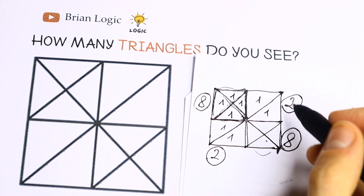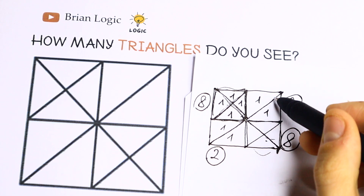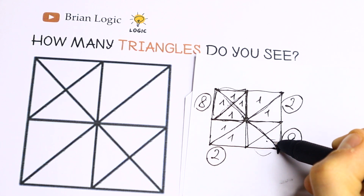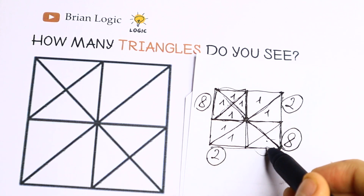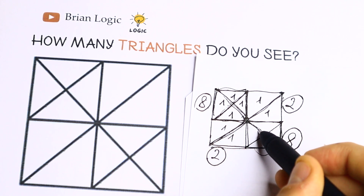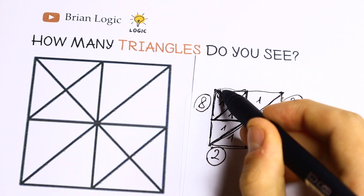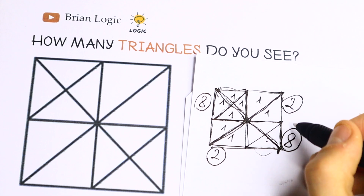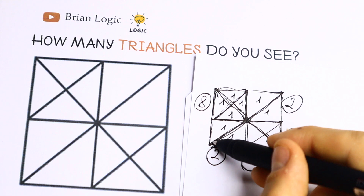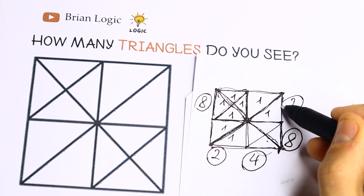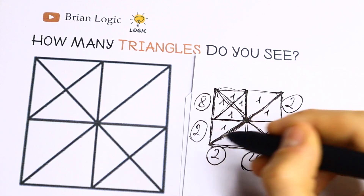But we already have lines right here. If we add this triangle with this one we will have a bigger triangle. As you can see we have one bigger triangle, and right here we will have the second one — this is a bigger triangle. Then we will have the third one and the fourth triangle. This line divides this giant square into two triangles: one on top and one on the bottom — so we have 2 more as well.